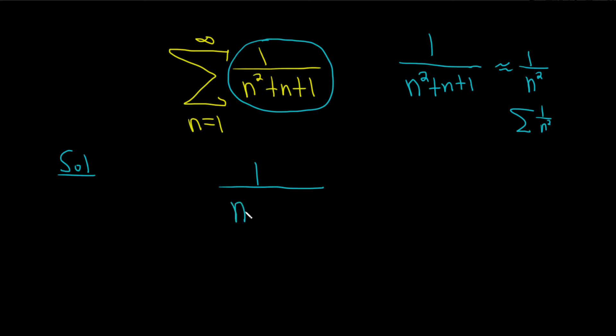So 1 over n squared plus n plus 1. And because we're trying to show convergence, you put a less than here. That's the key. That's why we went through all of this at the beginning. Because if you know what you're trying to show, you know what to put here. When you're trying to show convergence, you'll put a less than here.